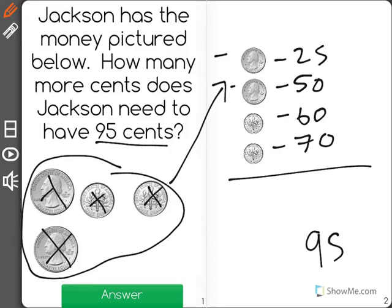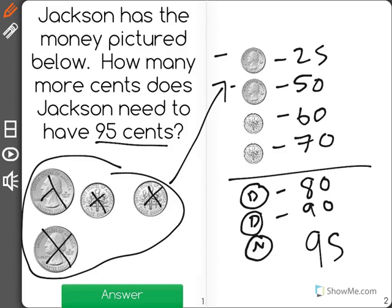we would need to add, well, let's start by trying another dime. One more dime would give us 80 cents. Another dime would give us 90 cents. And five more cents would be a nickel. So that would be 95.